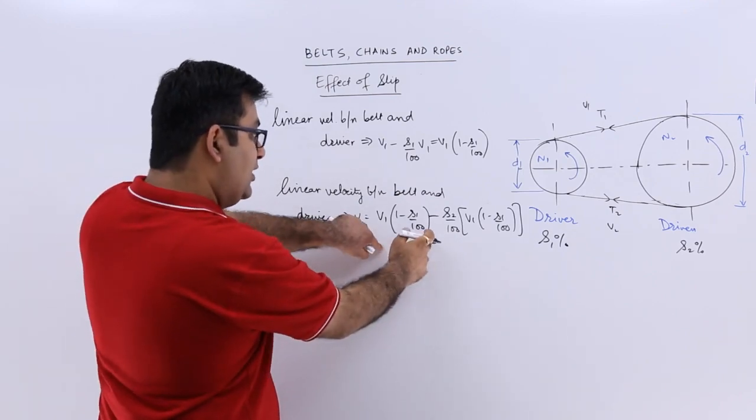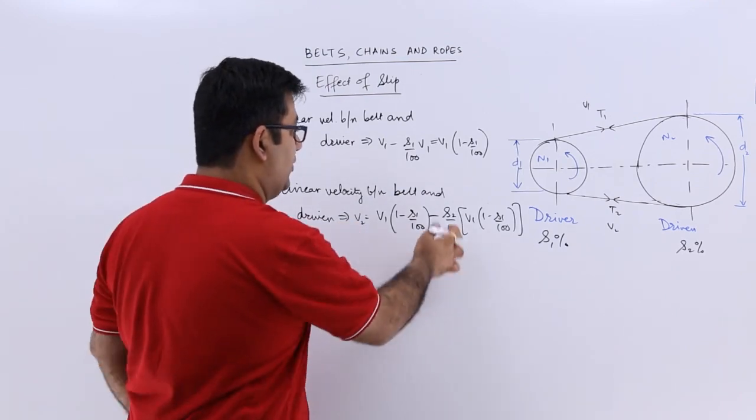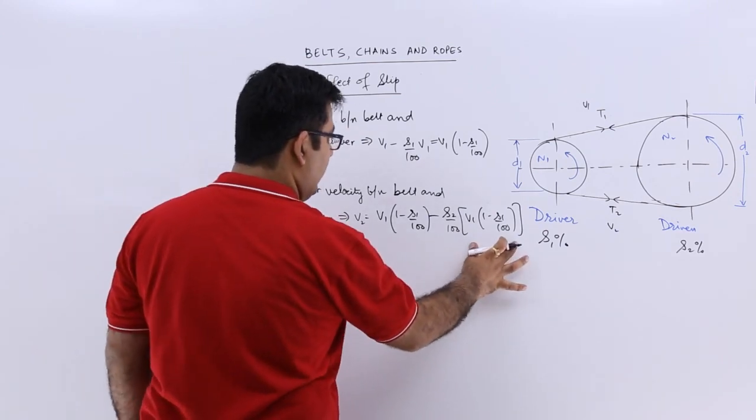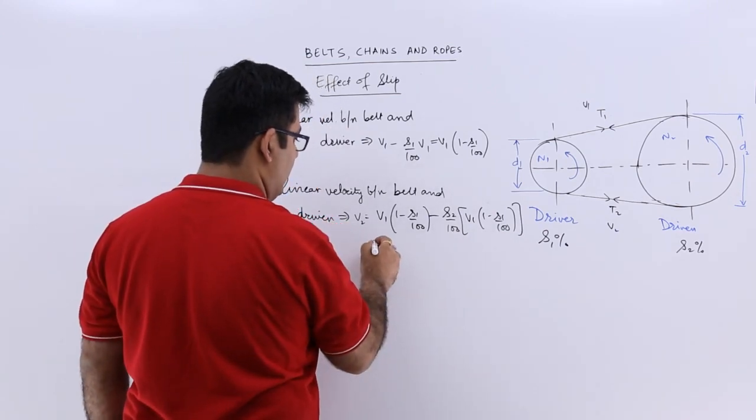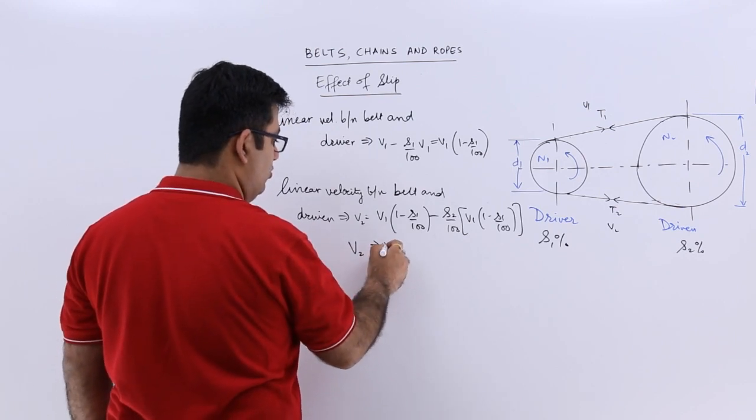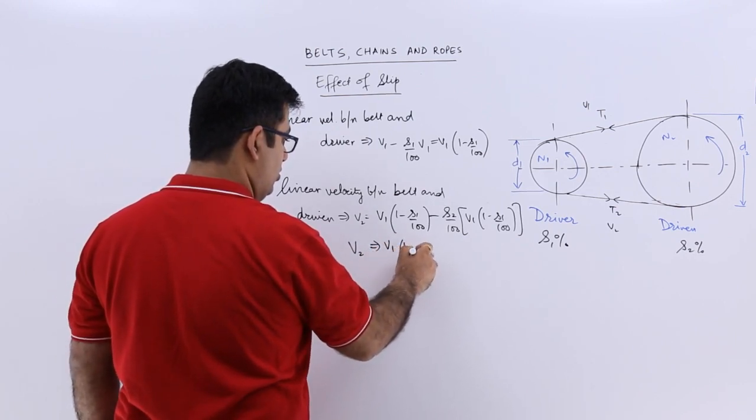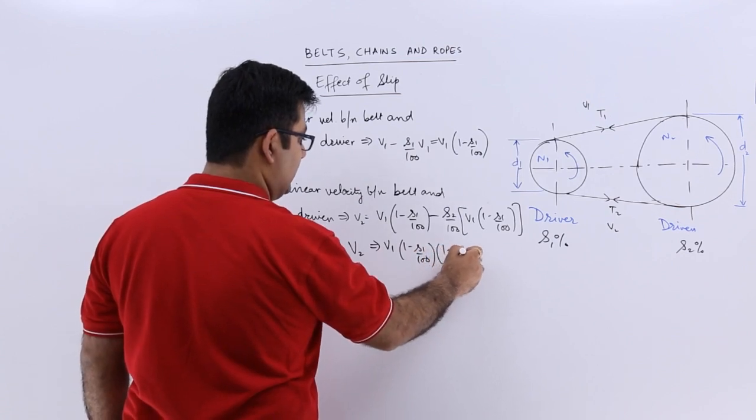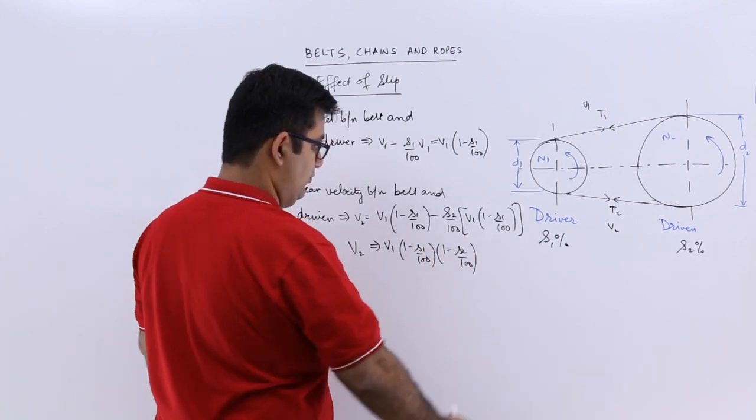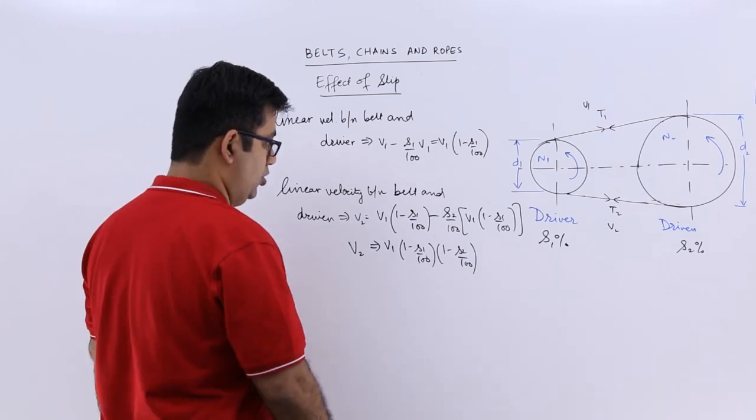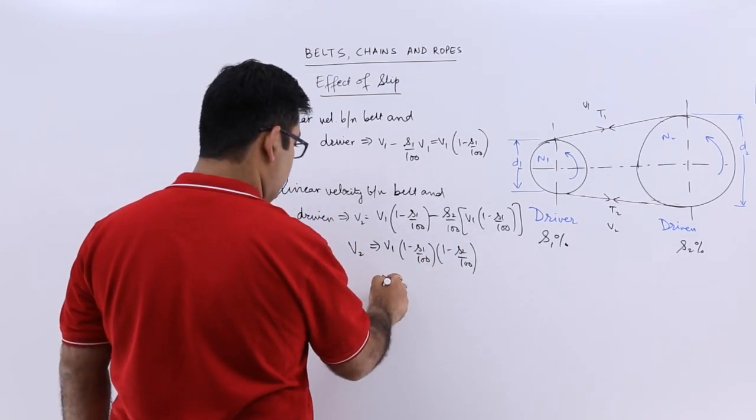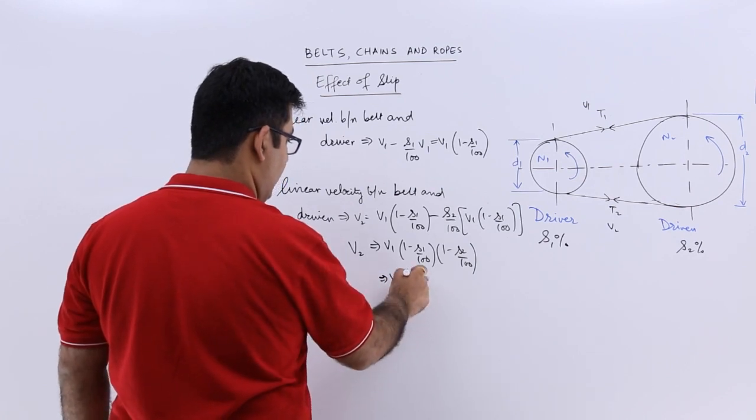So this much is coming in, still there is a reduction of s2 percent of this value. So I can take v1 times (1 minus s1/100) common and that would be v2, and you would be left with (1 minus s2/100).